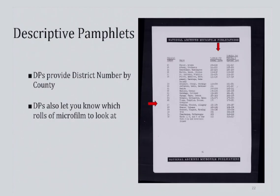In this example of a descriptive pamphlet for New York, we see that Monroe County is in District 28. The DP also tells us which microfilm rolls to look in for the 1862–1866 list.